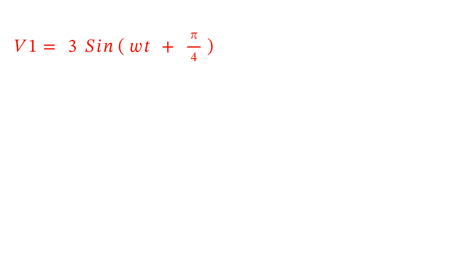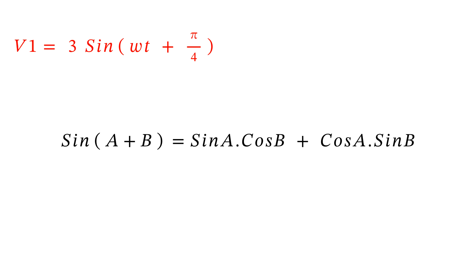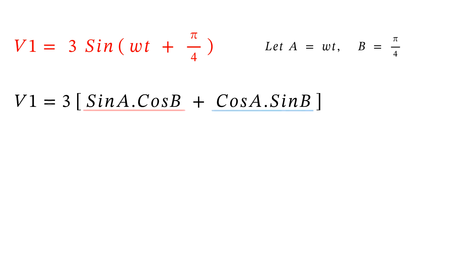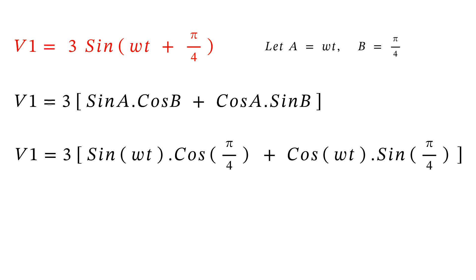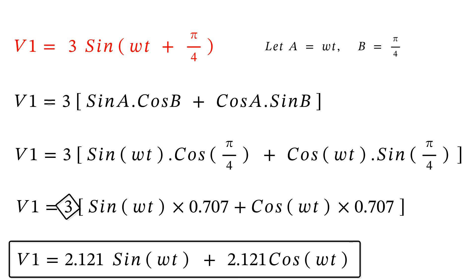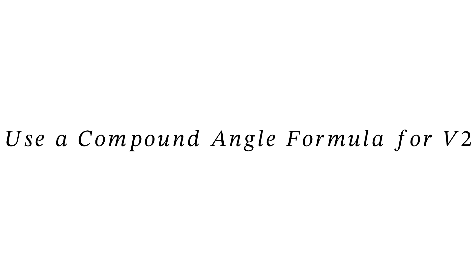Applying the compound angle formula to v1: v1 = 3 sine(ωt + π/4). Using sine(a + b) = sine(a)cos(b) + cos(a)sine(b) with a = ωt and b = π/4, v1 = 3[sine(ωt)cos(π/4) + cos(ωt)sine(π/4)] = 3[sine(ωt)(0.707) + cos(ωt)(0.707)]. Multiplying out by 3 gives v1 = 2.121 sine(ωt) + 2.121 cos(ωt). So v1 is resolved into sine and cosine with no phase shift.